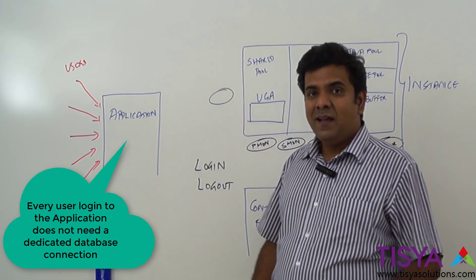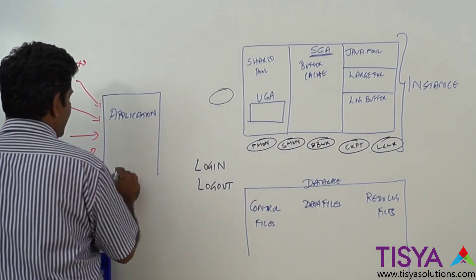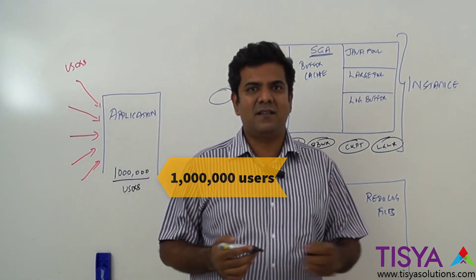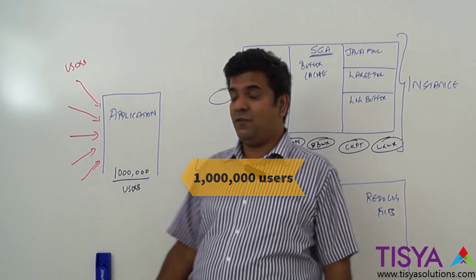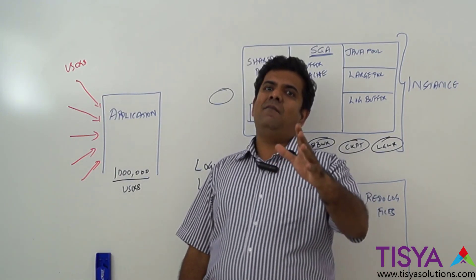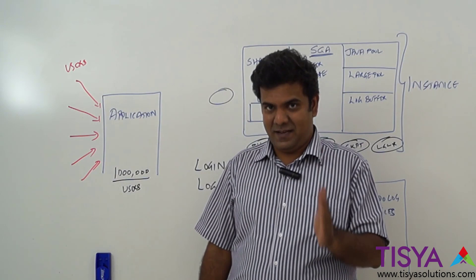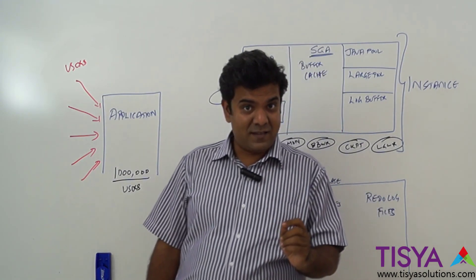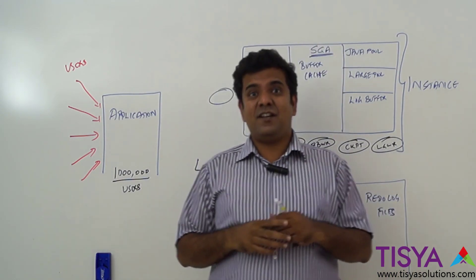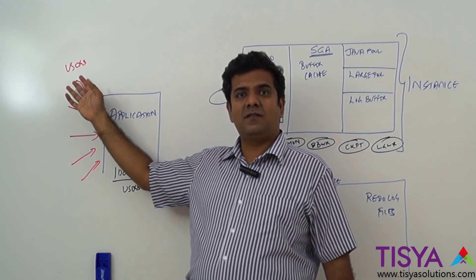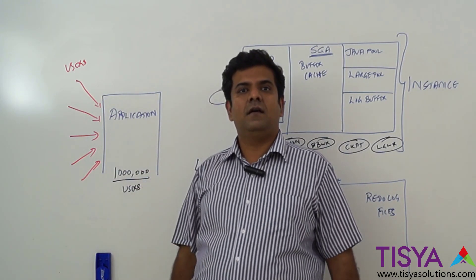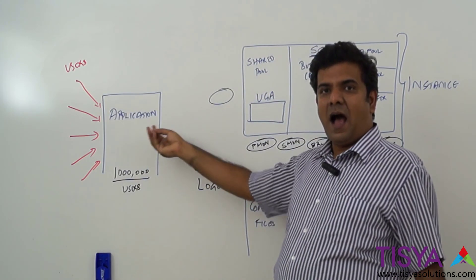When users are logging into the application, there is no need to create a database connection for every user's login. For example, if my application has one million users — like a ticket booking service or an e-commerce website — there could be millions of users in the application. But all million users are not necessarily going to log in at the same time, and even if they did, I don't want a million database connections to be created.